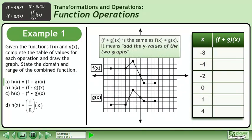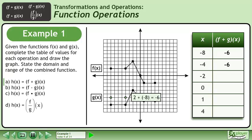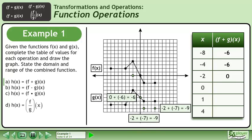f plus g means add the y-values of the two graphs. Add the y-values of both graphs to get negative 6, and record this value in the table. Add the y-values of the next point to get negative 6, then the next point to get 0. Add the y-values of the remaining points and record the sums in the table.